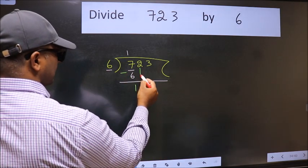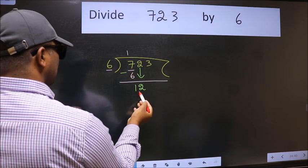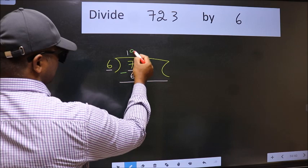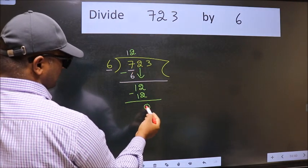After this, bring down the beside number. So 2 down. So 12. When do we get 12 in the 6 table? 6 times 2 is 12. Now we subtract. We get 0.